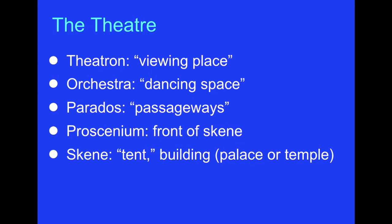Now, the parts of the theater. We have the theatron, which is the viewing place — it eventually becomes the word 'theater.' The orchestra, which becomes our word orchestra, but in the case of the Greeks it was the dancing space. The paredos are the passageways — there are two of them. Then we have the proscenium, which is the front of the skene. The skene was a tent or building that could represent a palace or a temple, or whatever it needed to be for the production. Skene obviously becomes the word 'scene.'